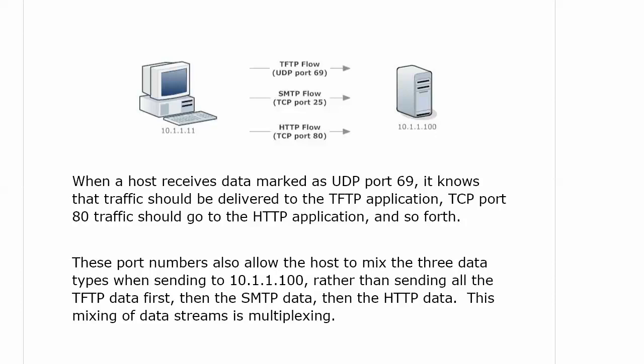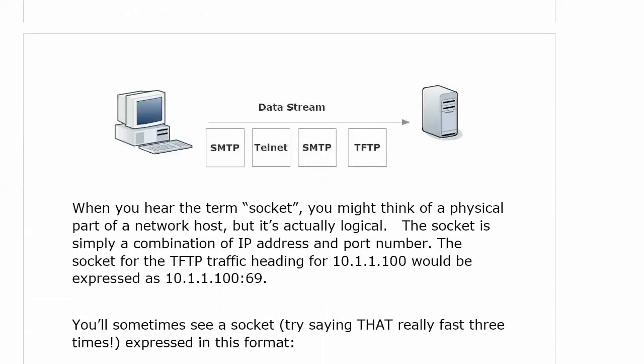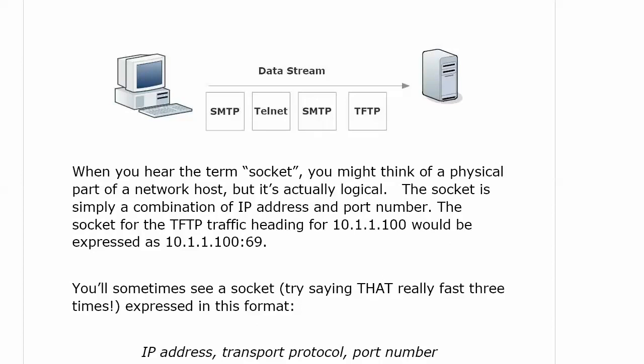These port numbers also allow the host to mix the three data types. What would happen if we didn't have port numbers and the data was all mixed up? The recipient would say, 'I don't know what this is.' We want our sender to be able to mix the data as it's being sent out via multiplexing. So you end up with one data stream that actually has three streams in it — an SMTP stream, a Telnet stream, and a TFTP stream. It does not make that sender wait until all of one type of traffic is sent.